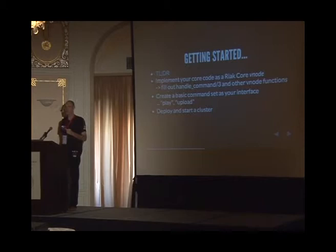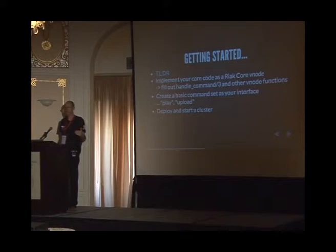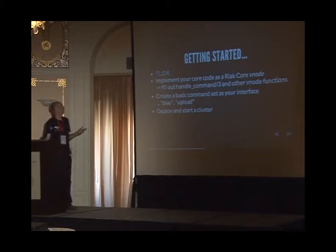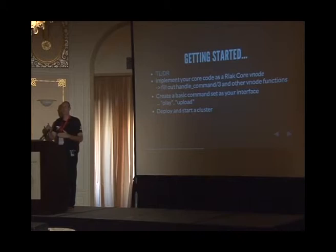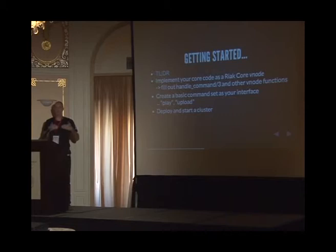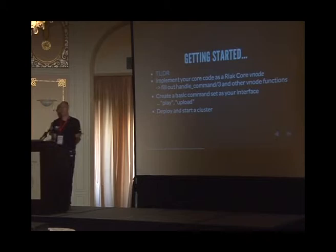The TL;DR is: go to Ryan Zezeski's Try Try Try blog, and you'll see a series of templates you can use for starting off with Riak Core-based systems. I used those templates myself. You start off by writing a Riak Core vnode, which essentially means filling out some handle_command operations — basically filling out templates. Then you implement your own API, which is basically the set of commands you want your actual vnode to handle. In the Riak KV case that would be things like get and put; in my case, it's play a video or upload a video.